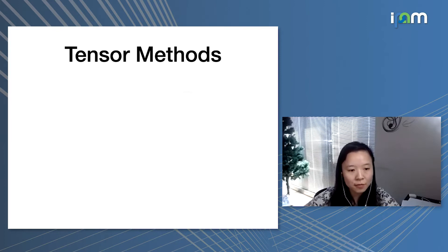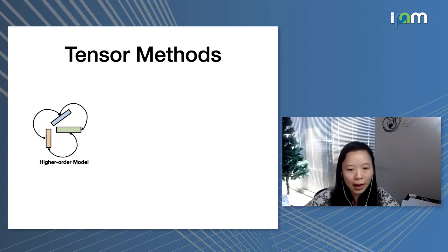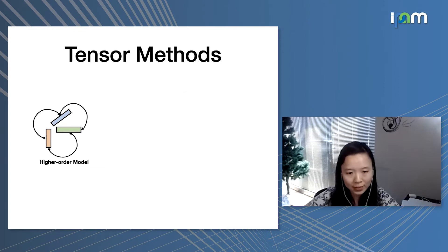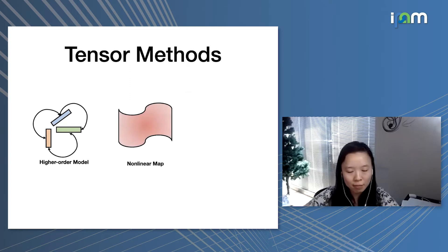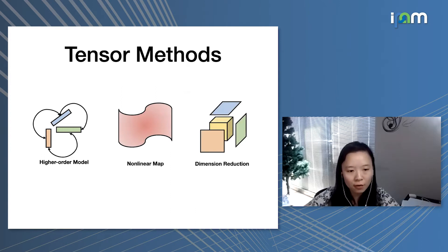The theme of this talk is tensor methods, and I want to argue that tensor methods are natural methods to model spatial temporal data, because tensors generalize matrices and can naturally encode higher-order dependencies, as they are higher-order models themselves. In contrast to matrix models, which are linear operators, tensor models are multilinear operators, and hence represent the nonlinear maps in our spatial-temporal dynamics. There is also a rich family of tensor models, such as CPD decomposition, Tucker decomposition, and tensor train decomposition, which allow efficient dimension reduction.